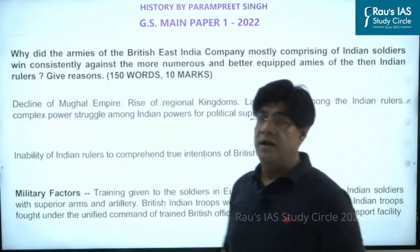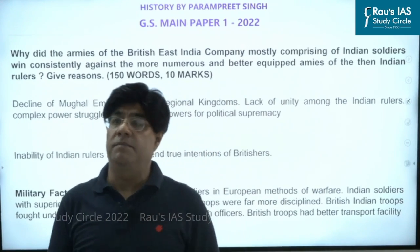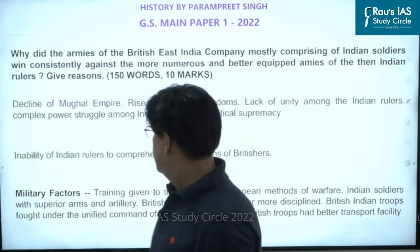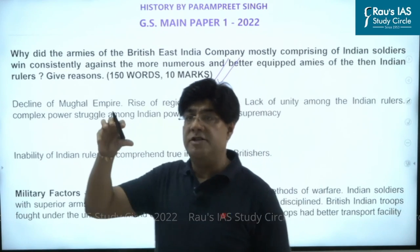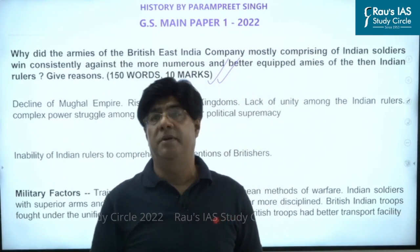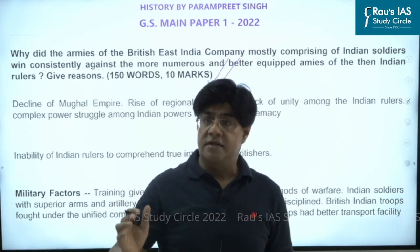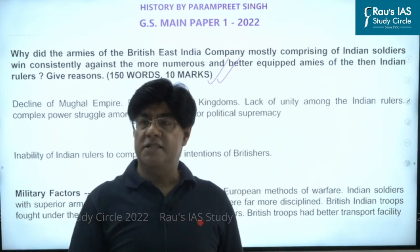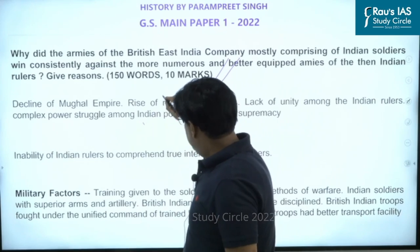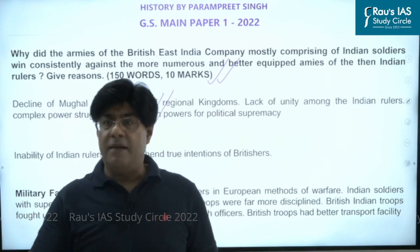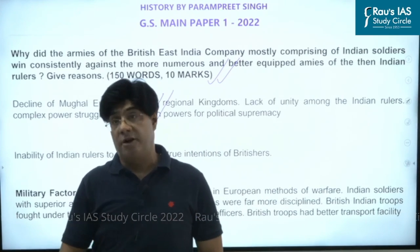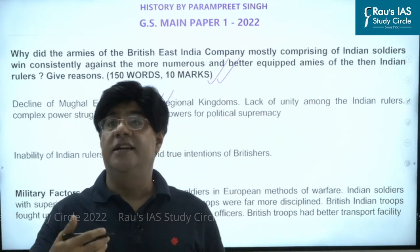The next question is from modern history: why did the armies of British East India Company, mostly comprising Indian soldiers, win consistently against the more numerous and better-equipped armies of the then Indian rulers? This question is about the causes for the success of the British in India. The question mostly indicates the military weakness of the Indian rulers, but when writing the answer we should take a bigger picture and consider other factors as well.